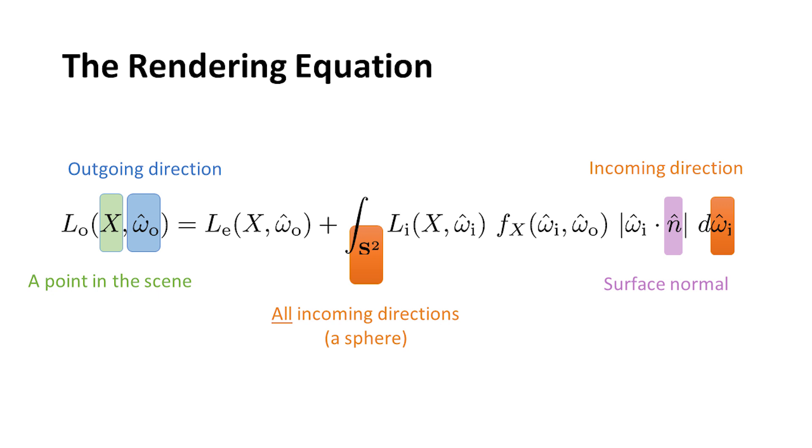To start with, there's a bunch of inputs for the rendering equation. There's a point x, which is some point in the scene—that's the point that you're looking at. And there's an outgoing direction, this omega-hat, omega-hat-out-o-sub-o, and that's basically a direction towards the eye.